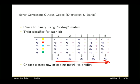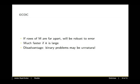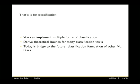You can make your coding matrix as long as you want it to be to increase the number of bits that you can get wrong in your final classification. This isn't a course on error correcting codes, so we won't go into doing that, but it can be done. The nice thing about this is that if the rows of M are far apart, and you can make them arbitrarily far apart as you want, you'll be robust to error. This can be much faster than the alternatives if k is large, because you basically only need a logarithmic number of bits compared to the number of classes. But the disadvantage is that these binary problems that you're training classifiers for may be unnatural, and maybe the underlying classifiers won't be able to do a good job.